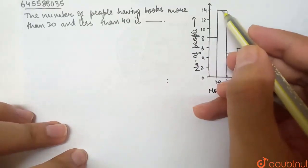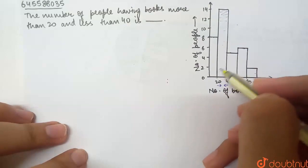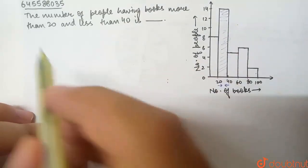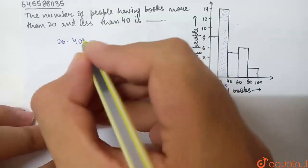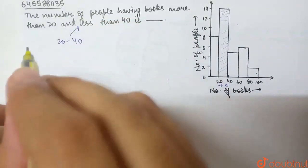So, what are we doing here? Histogram, just one of the time. This is our 20 to 40 books. And what do we have: more than 20 and less than 40? So, 20 to 40 is our class. This is our class. More than 20 and less than 40.